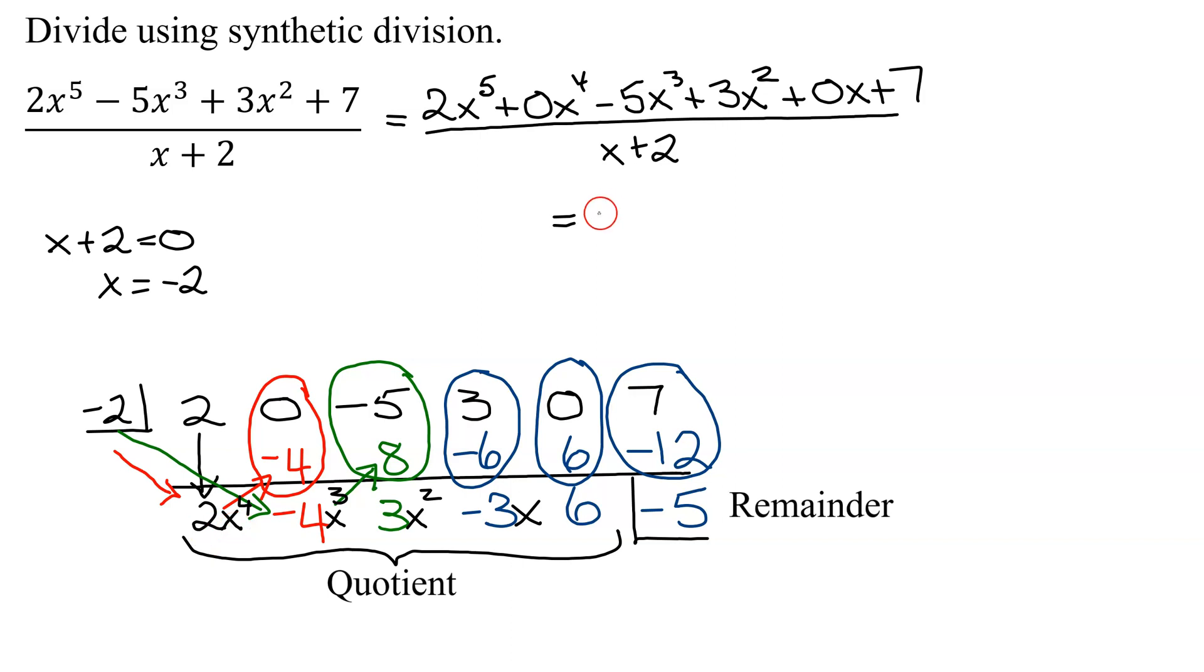I'd write 2x to the fourth minus 4x cubed plus 3x squared minus 3x and finally plus 6. And then I need my remainder, so I have minus 5 all divided by my divisor, which is x plus 2.